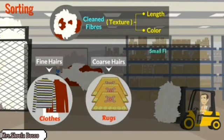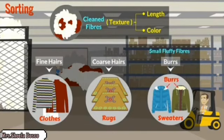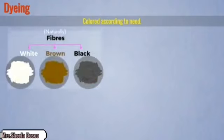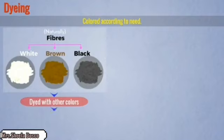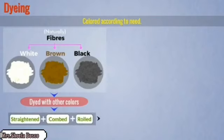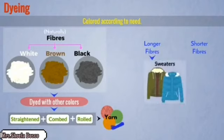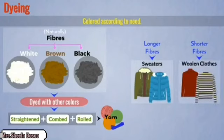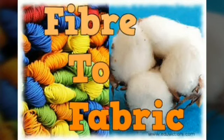The soft material is used for woolen clothes and the coarse material for making rugs. Small fibers are used for sweaters and long fibers for shawls. The basic colors from the sheep are white, brown, and black according to the animal. Then they dye it, color it, straighten it, comb it to make it neat, roll it, and make it into yarn to send to textile factories. Larger fibers go for sweaters, shorter fibers for woolen clothes, longer fibers for shawls, and shorter fibers for small baby clothes.